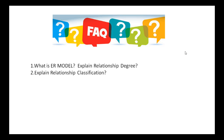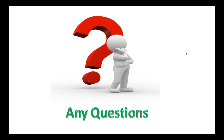Coming to frequently asked questions: 'What is the ER model and explain relationship degree?' — this is important for 10-mark or 5-mark questions. 'Explain relationship classification' — important for 5 marks. If you have any doubts, contact me immediately to clarify. Watch the YouTube videos thoroughly and write running notes. Don't forget, students. Thank you.